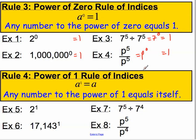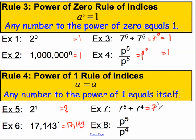Now I want to quickly formalise a rule we already know: the power of 1 rule. A base number to the power of 1 is just equal to the base number. For example, 2 to the power of 1 is just equal to 2. 17,143 to the power of 1 is just equal to 17,143. 7 to the 5 divided by 7 to the 4 equals 7 to the 5 subtract 4, which is 7 to the 1, and 7 to the 1 is just 7.